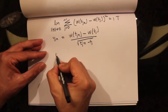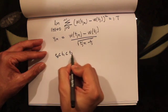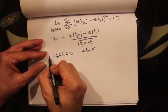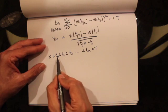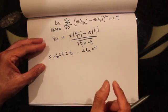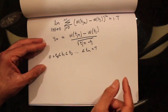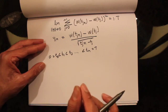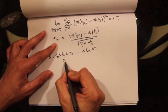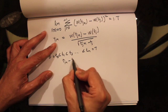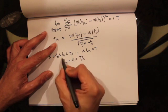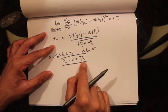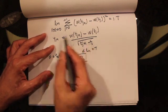Recall that we split time into n intervals given by t_0, t_1, t_2, all the way to t_n, where t_n equals t and t_0 equals 0. Previously, these time increments didn't have to be equal, but for this discussion let's assume they are equal, so t_{j+1} minus t_j equals t over n for all j.